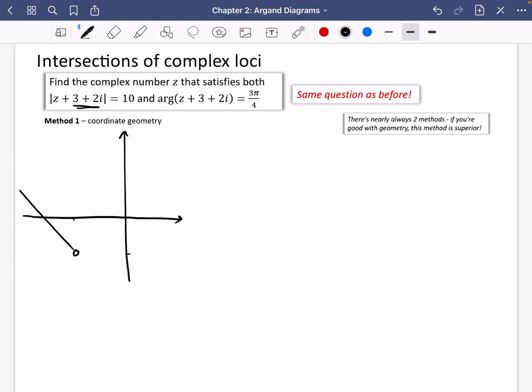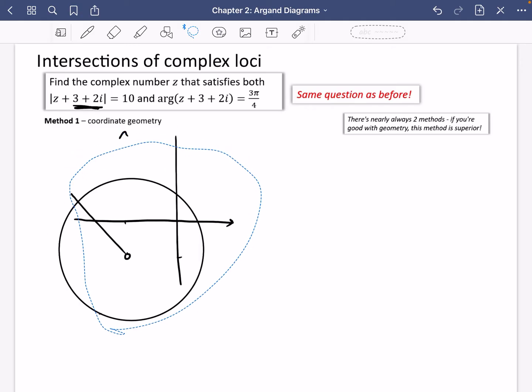This one also is a circle. It's got a center of minus 3 minus 2, and it has a radius of 10. So in fact, I think I probably should have drawn this a little bit bigger, but hey. Radius of 10 means it's definitely going to be crossing.